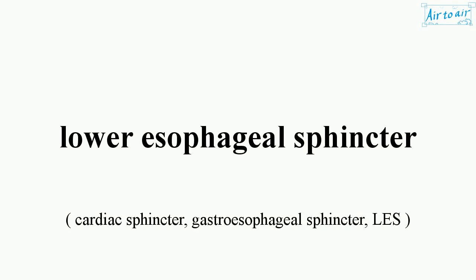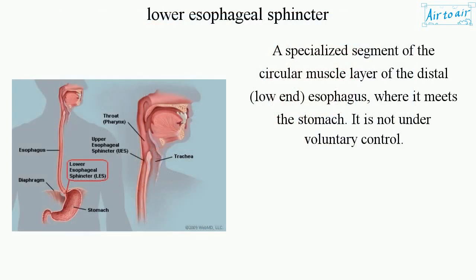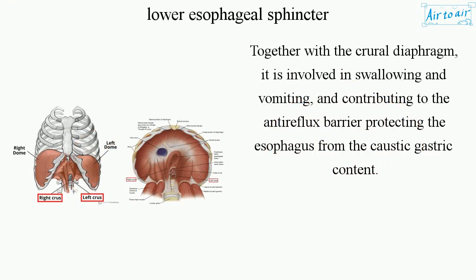Lower esophageal sphincter: a specialized segment of the circular muscle layer of the distal esophagus, where it meets the stomach. It is not under voluntary control. Together with the crural diaphragm, it is involved in swallowing and vomiting, and contributes to the anti-reflux barrier protecting the esophagus from caustic gastric content.